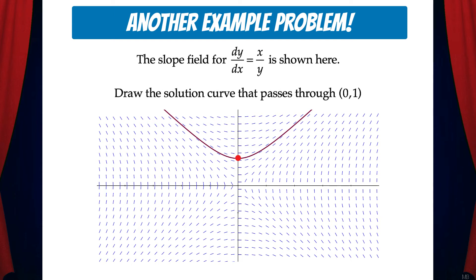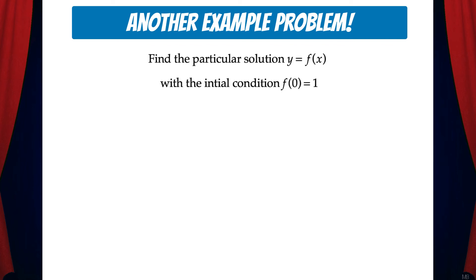Imagine that you're in a boat and the current of the river is carrying you along. Now suppose the question asks, find the particular solution y equals f(x) with the initial condition f(0) equals 1. So what we'll do here is use the technique we learned from the video on separable differential equations and solve for y.